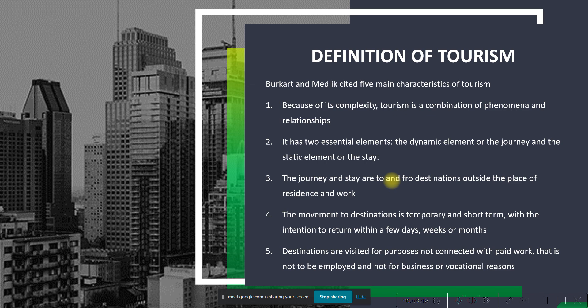We covered the five main characteristics of tourism — it's more about relationships and phenomena, so it's more psychological. We capitalize on the emotions and experiences of our tourists; it's not a tangible product but about going there to experience and enjoy. Tourism has two elements: the dynamic element, which is the journey going to your destination, and the static element, which is when you arrive and stay for more than 24 hours. It's also temporary — you travel for less than a year and more than 24 hours.